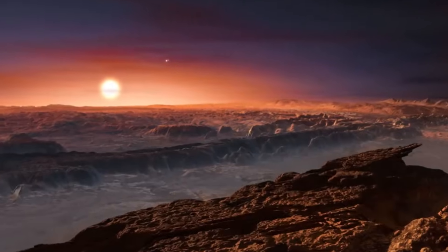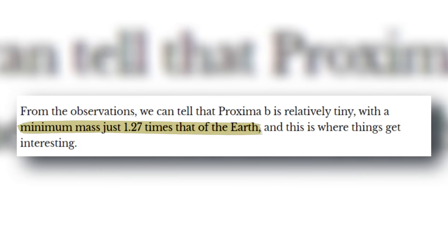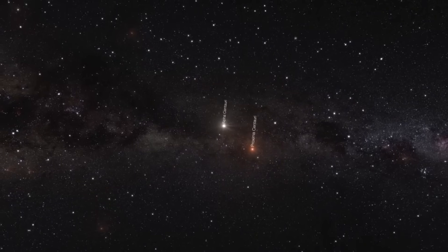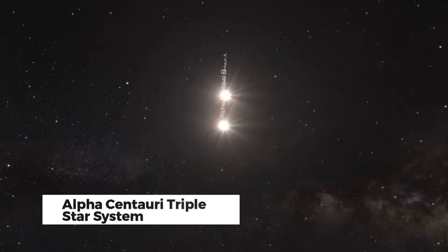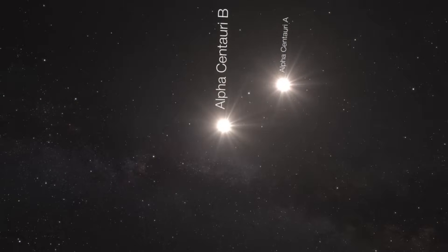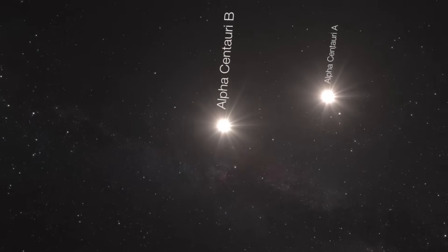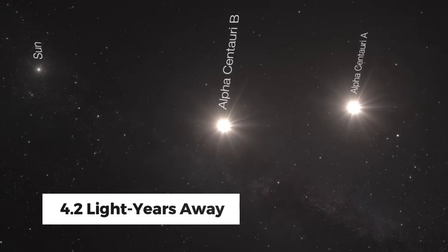Proxima B is a rocky exoplanet about 1.27 times the size of Earth, residing within the habitable zone of its parent star, an M-class red dwarf and part of the Alpha Centauri triple star system. Proxima B is our closest neighboring star, only about 4.2 light-years away.